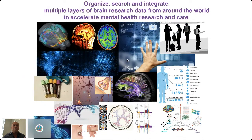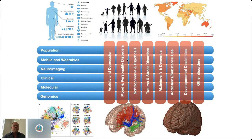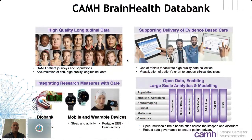Organizing and integrating data from the clinic is also necessary to accelerate bridging between the clinic and the basic neuroscience, giving us a more integral picture of each individual and their care. One of our ambitions in the center is to establish essentially a brain health atlas that would integrate data from the genomics level, the molecular level, clinical neuroimaging, mobile and wearables, and populations — but transdiagnostically, across different disorders. You'll learn more about this in the context of the CAMH brain health data bank, which is our flagship effort to collect high-quality longitudinal data.